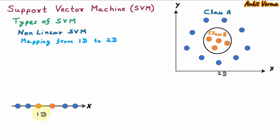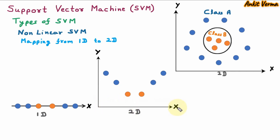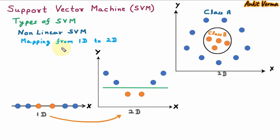In the diagram, we have only a single x-axis, so this is 1D space. On this axis, we have data points of two classes — class blue and class orange. These are not linearly separable, so we need to apply the kernel trick, meaning increasing the dimension. We are converting one dimension to the second dimension. In the diagram, we now have two axes — x-axis and y-axis — so this is two-dimensional space. In the second dimension, we can easily separate the data points using a straight line. This is called mapping from 1D to 2D.